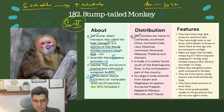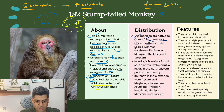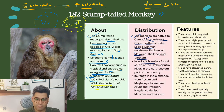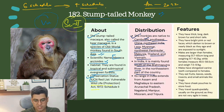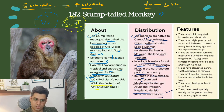The Stump-Tailed Monkeys are native to Cambodia, southwest China, northeast India, Laos, Myanmar, northwest peninsular Malaysia, Thailand and Vietnam. In India, they are mainly found south of the Brahmaputra River in the northeastern part of the country. Their range extends from Assam and Meghalaya to eastern Arunachal Pradesh, Nagaland, Manipur, Mizoram and Tripura.